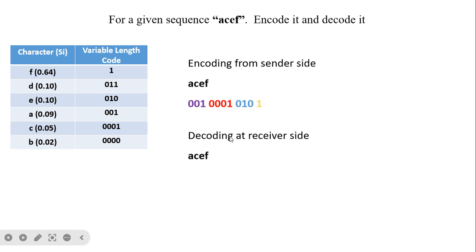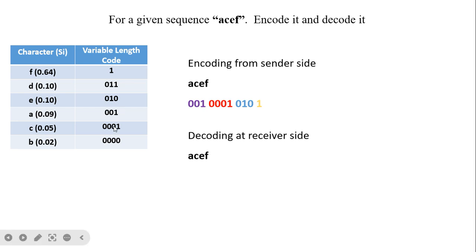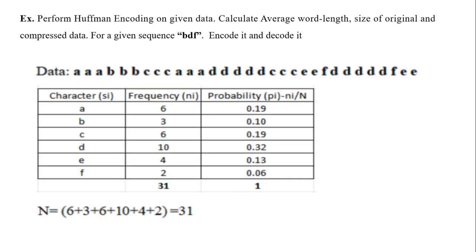Continuing decoding: three zeros again narrow to the last two cases, then adding '1' matches C. Next, '010' matches only E (not D), and finally '1' alone matches F. Thus the decoded sequence is A, C, F. This is how encoding and decoding works — the lookup table must be present at both sender and receiver side.